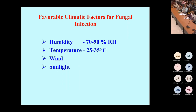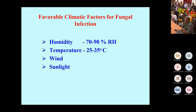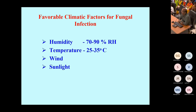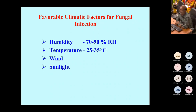One important factor for the success of entomofungal infection is the climatic condition, particularly humidity. It prefers 70–90% RH. If RH is very low, multiplication will be minimal. The temperature range of 25–35°C is most optimum. Wind and sunlight are also major factors determining fungal infection.